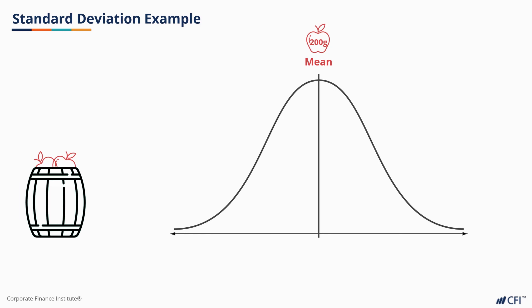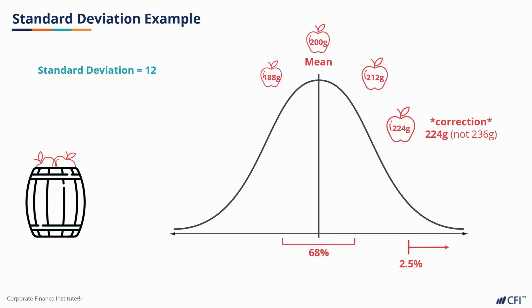Imagine we had a bucket of gala apples and we knew that the mean weight of these apples was 200 grams. With a standard deviation of 12 grams, if we pick an apple out of our bucket, that would mean it has a 68% chance of being within 188 and 212 grams. It also means that we have only a 2.5% chance of pulling out an apple that is more than 236 grams. We'll come back to this idea as we get more into inferential statistics.